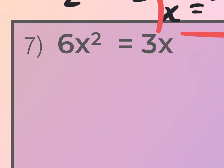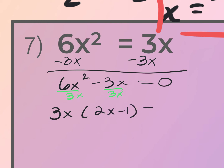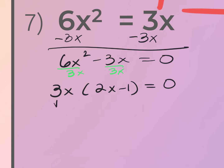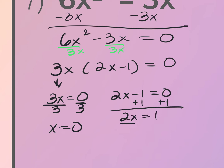For number seven, set the equation equal to zero by subtracting 3x from both sides: 6x² − 3x = 0. Factor out the GCF of 3x to get 3x(2x − 1) = 0. Setting each factor equal to zero: 3x = 0 gives x = 0, and 2x − 1 = 0 gives x = 1/2. So the two solutions are x = 0 and x = 1/2.